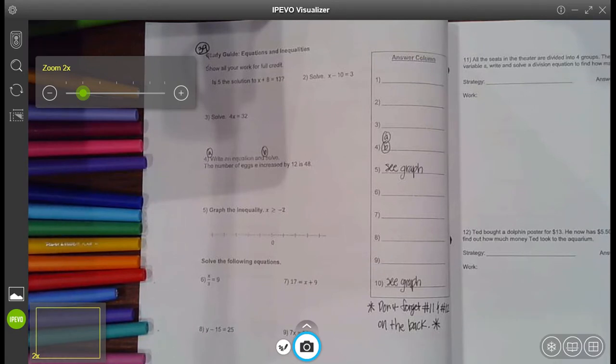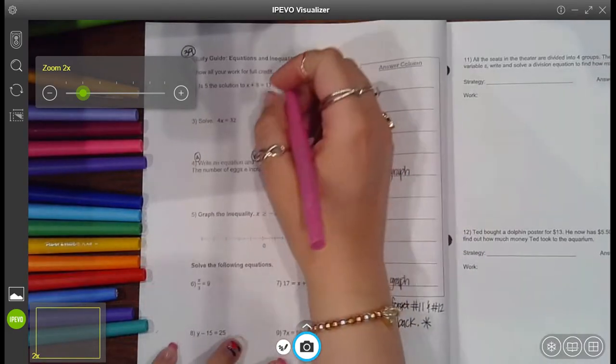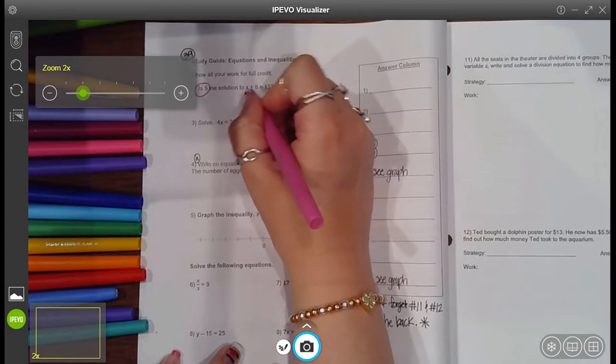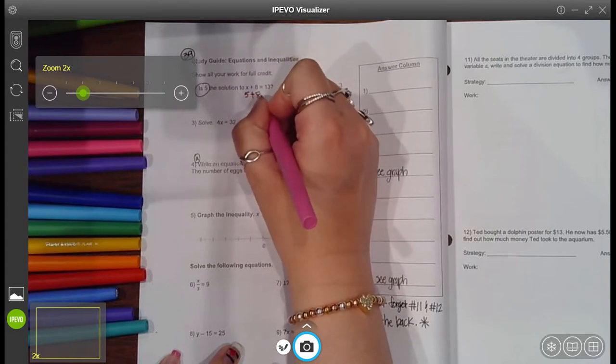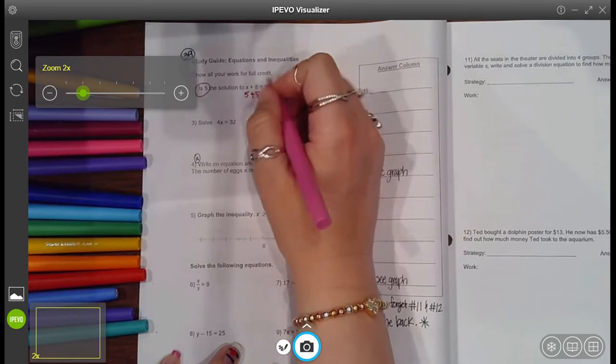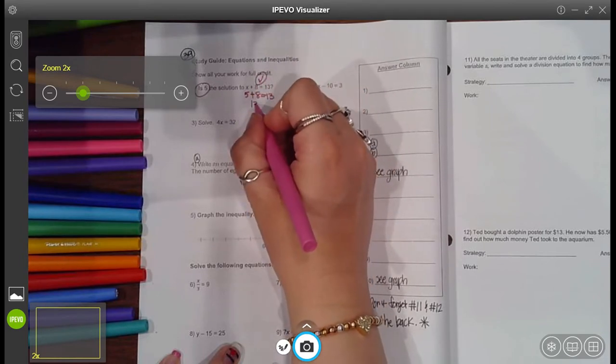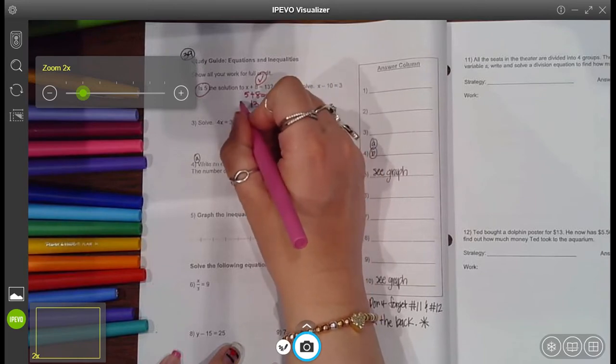It says, is 5 the solution to x plus 8 equals 13? So essentially, you're just checking it for this person. So I'm going to substitute in what they think the answer is for x. They think it's 5. Bring down plus 8 equals 13, and simplify. 5 plus 8 is 13.